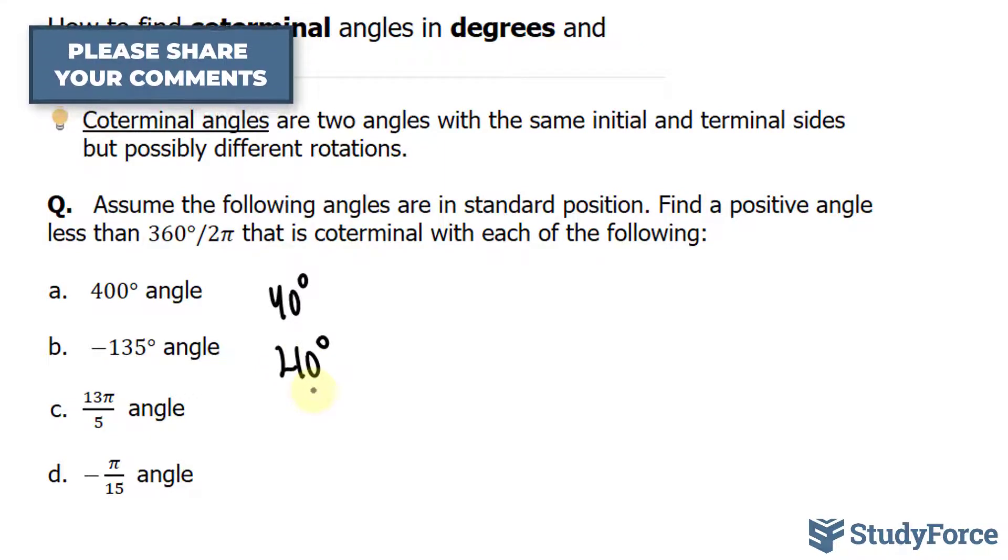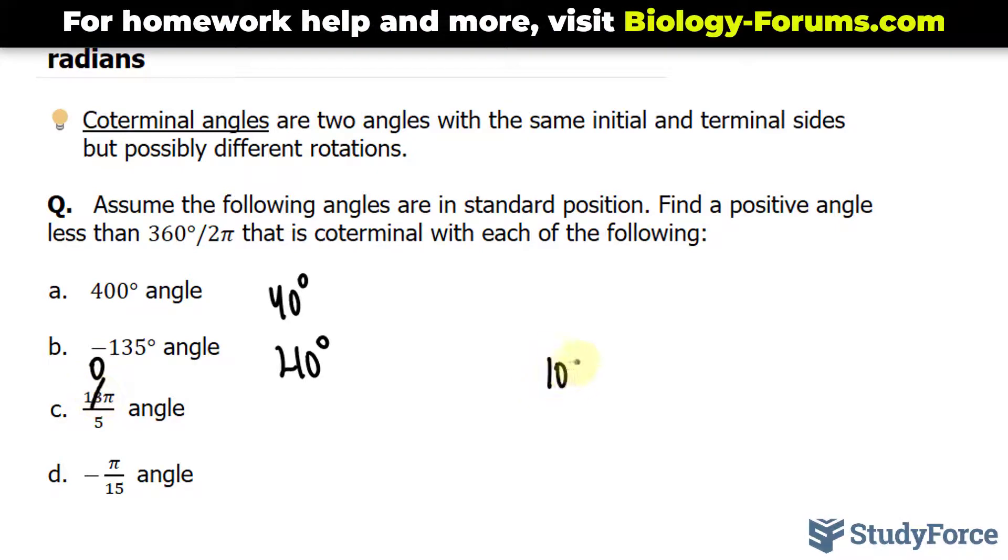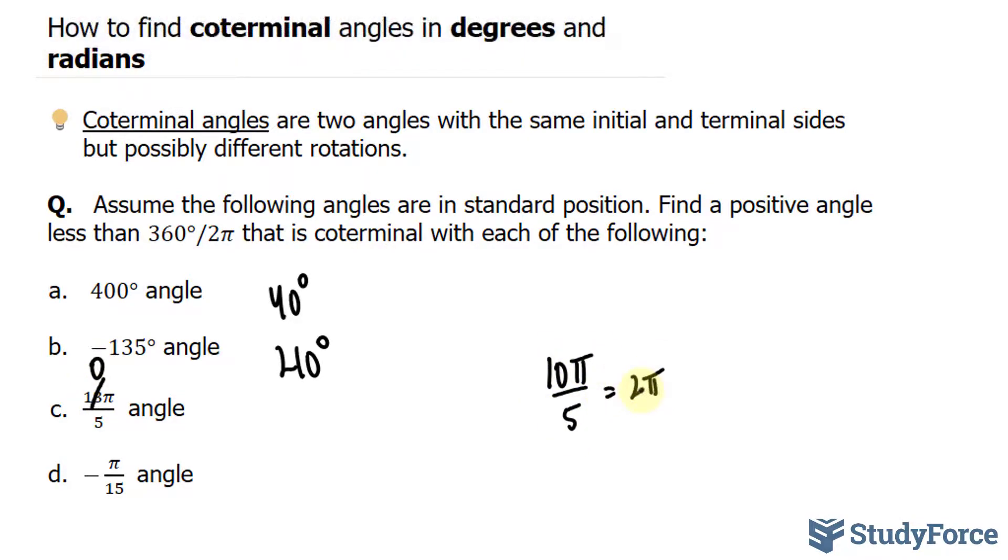Now we'll move on to two examples that are in radians. We have 13 pi over 5. This is clearly larger than 2 pi, because if I were to make this plus 13 into a smaller number like 10, I would have 10 pi over 5, which is equal to 2 pi. 2 pi is a full circle.